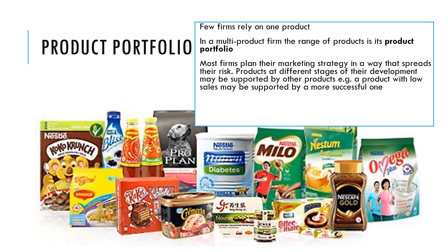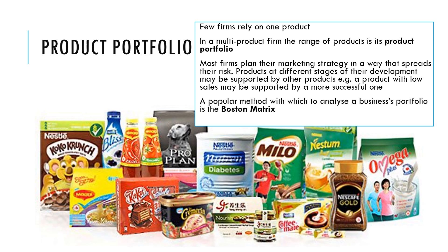Most firms have a portfolio of products because it spreads the risk. Different products might be at different stages of their product lifecycle, so we can use a more successful one in maturity to fund one perhaps in development. Or if one is not doing so well, a high luxury brand might be doing well if the economy is booming.